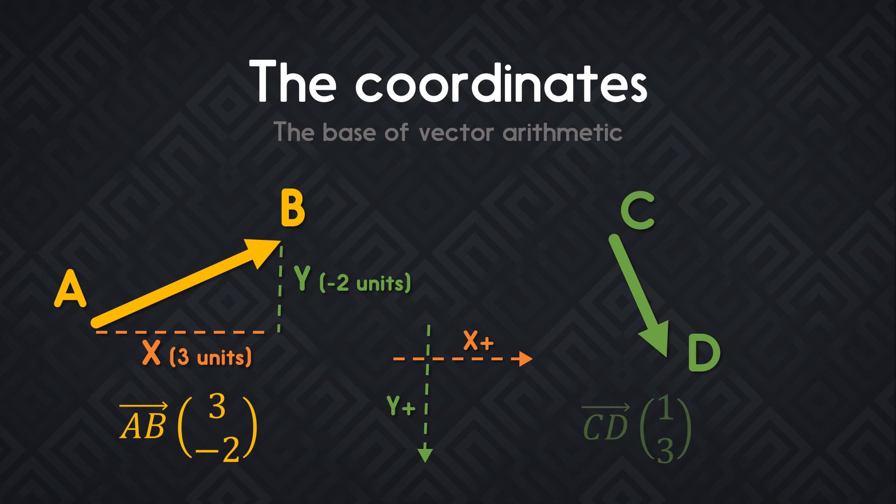Here's another example with the CD vector. To go from C to D, you have to move one unit to the right on the x-axis and three units down on the y-axis. So, it has coordinates of 1 and 3.